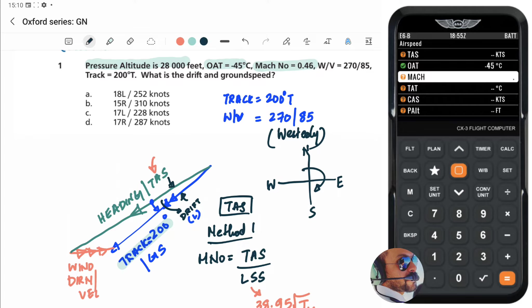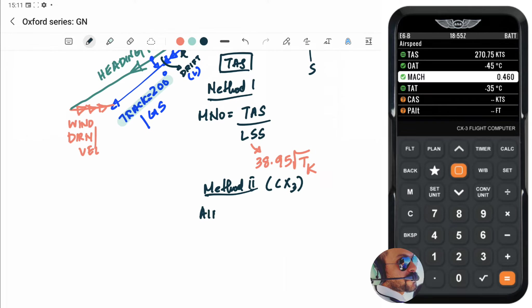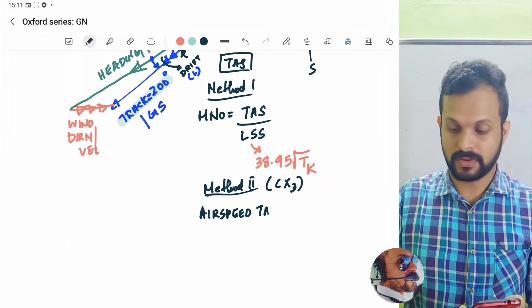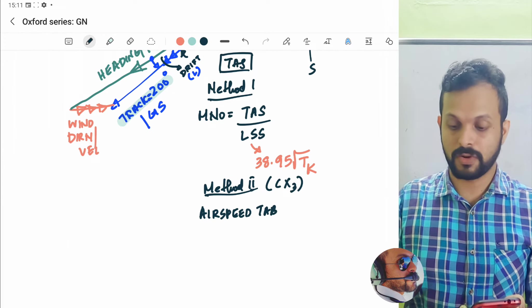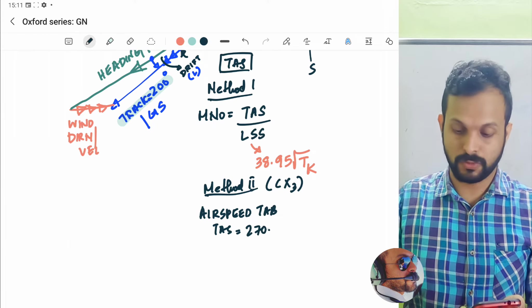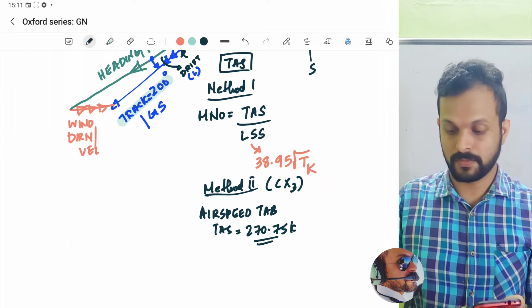Now, what is the Mach number given in the question? 0.46. That is it. Once you press the orange button, you will instantly get the true airspeed as 270 decimal 75 knots.